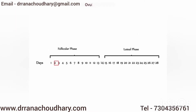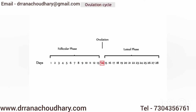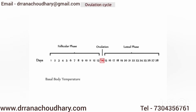If your menstrual cycles are regular, that is around 28 to 30 days, once the bleeding starts, that's called day 1 of your menstrual cycle. The follicle starts growing and somewhere around day 13, 14 or 15, the egg is mature and it ruptures. This rupture of the follicle and release of the egg is known as ovulation.